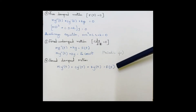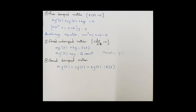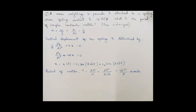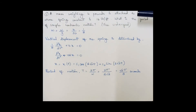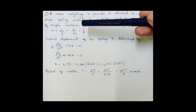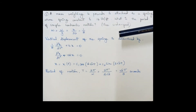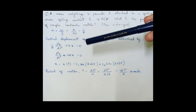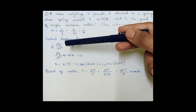Let's take an example: a mass weighing 4 pounds is attached to a spring whose spring constant is 16. What is the period of simple harmonic motion? From the question, this is free undamped motion. The mass is m = W/g = 4/32 = 1/8. The displacement variable here is x.